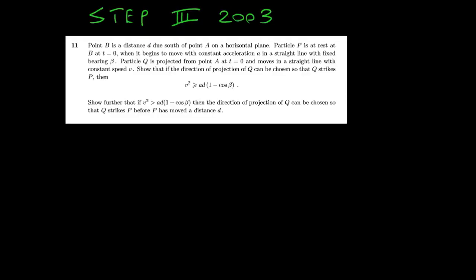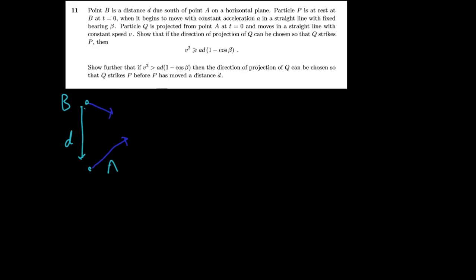Okay, so what do we've got here? We've got a point B and a point A. The distance between them is D. Basically we're going to project two particles just in straight lines, so not like projectiles, we're just gonna shoot them off here like that. Particle P is at A and it's gonna be shot off at constant acceleration A, and this angle is, oh I've got B and A the other way around, oops, oh well, it's beta.